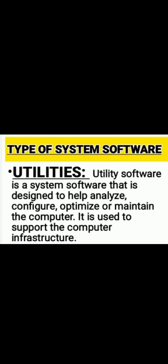Still on types of system software, we have utility software. Utility software is a system software designed to help analyze, configure, optimize, and maintain the computer. It is used to support the computer infrastructure so that people can use the computer effectively and efficiently.